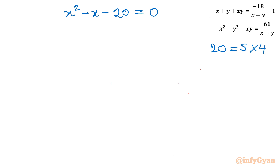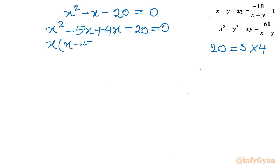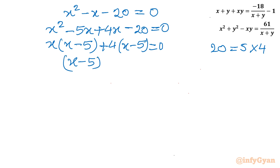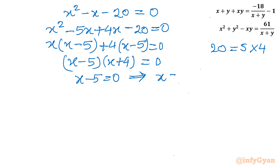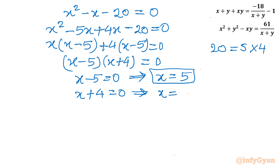Let us solve the quadratic x squared minus x minus 20 equal to 0. Splitting the middle term: minus 5 plus 4 equals minus 1, and product is minus 20, so we write minus 5x plus 4x. Taking x common from the first two terms gives x minus 5, and 4 common from the last two gives x minus 5. The factorization is x minus 5 times x plus 4 equal to 0. So x equal to 5 or x equal to negative 4.